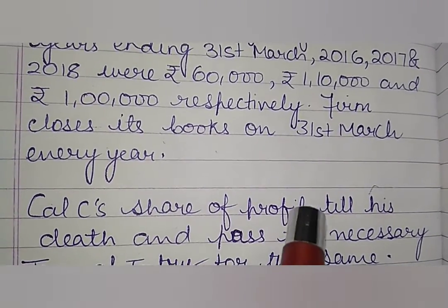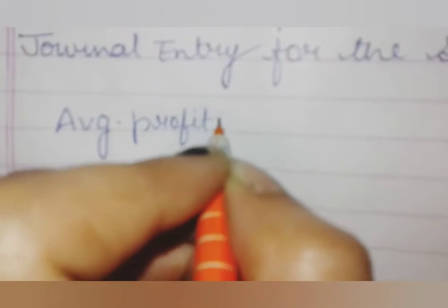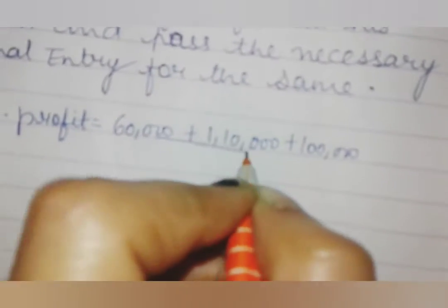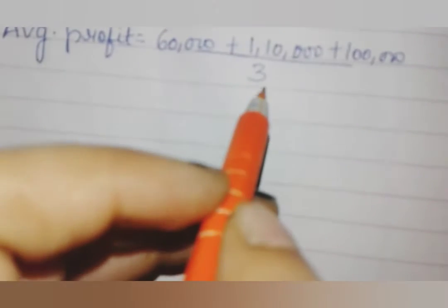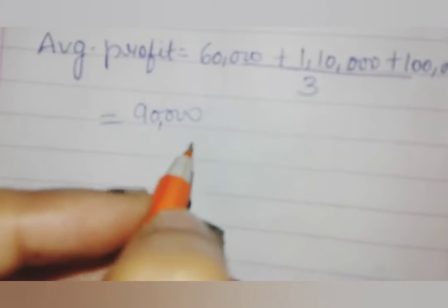Calculate C's share of profit till his death and pass the necessary journal entry for the same. First, we calculate the average profit. This is based on 3 years of profit, and the answer will be Rs. 90,000.